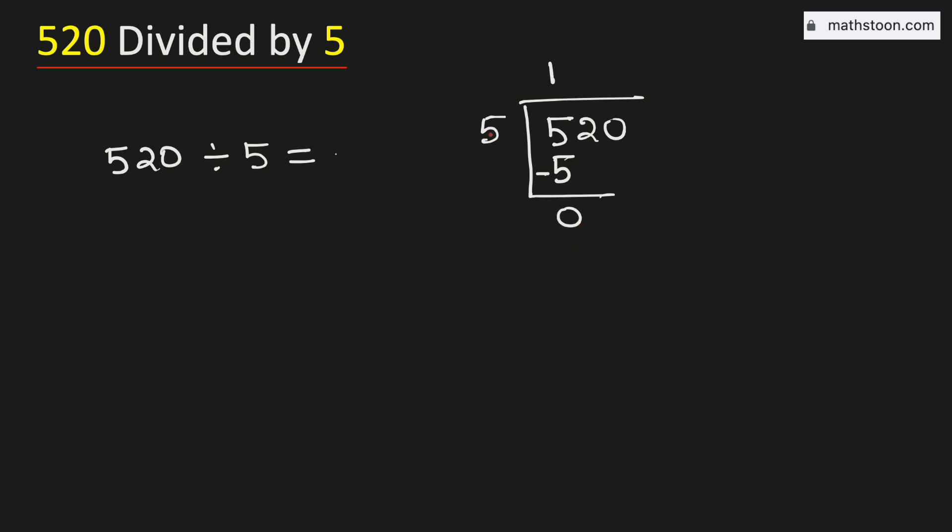Now see that 0 is less than 5, that is why we will bring down this number 2 here. But see that this is the number 2, so we will remove this 0.